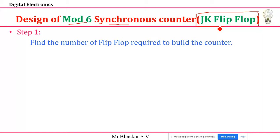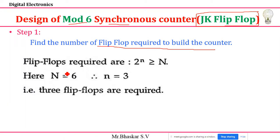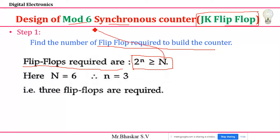The first step is to find the number of flip-flops required to build the counter. To do this, I'll give a small formula: flip-flops required — 2 to the power of n should be greater than or equal to capital N, where capital N indicates the number of modes and small n indicates the number of flip-flops required.